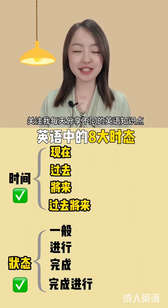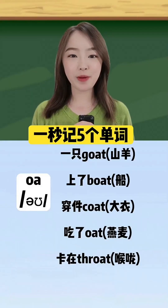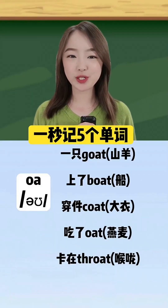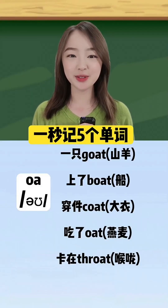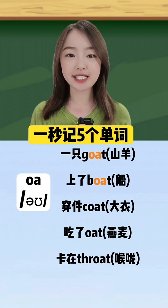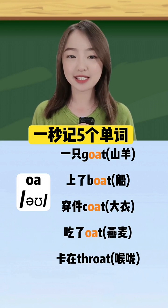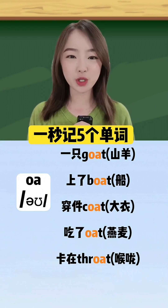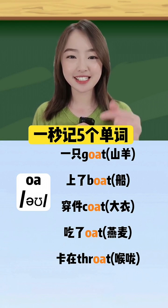关注我，每天分享不同的英语知识点，欢迎和我一起来学习哦。三词不用背，听声音就能会。OA组合常发O音：一只goat上了boat，穿件coat，吃了oat，卡在throat。你都学会了吗？学会了给老师一颗小星星吗？